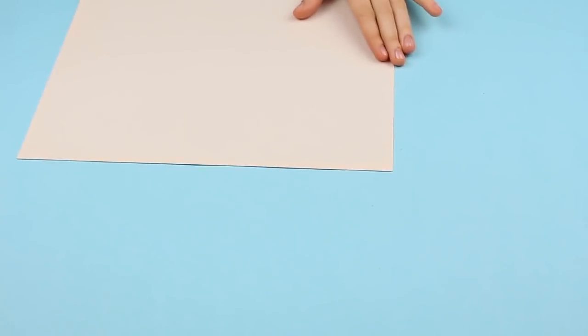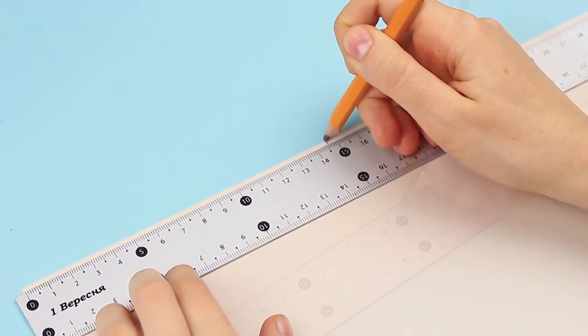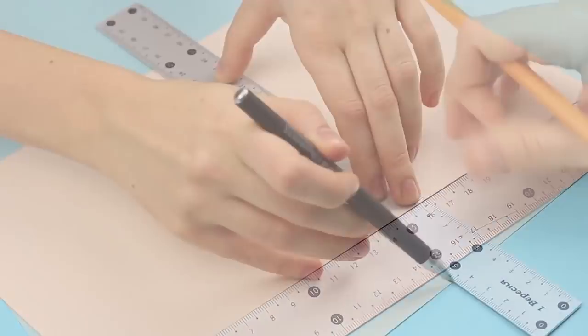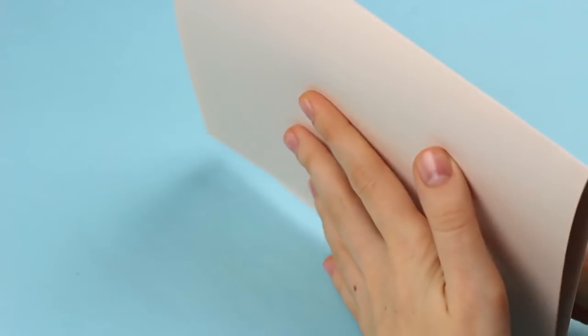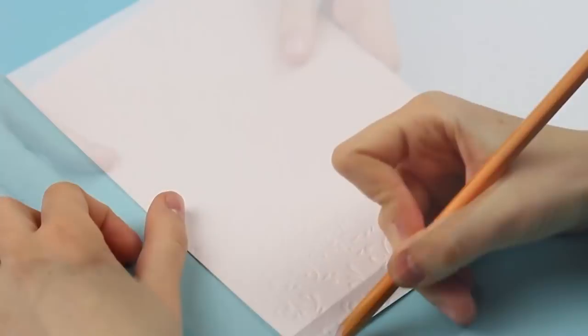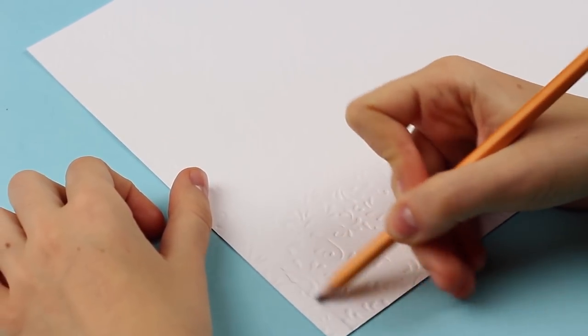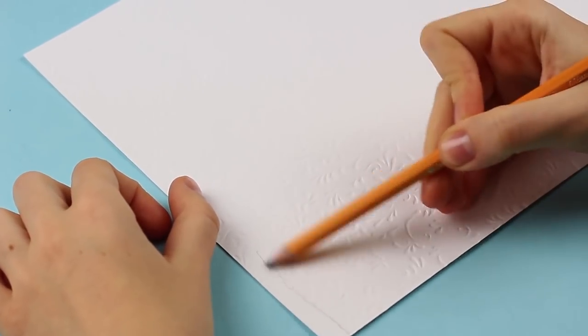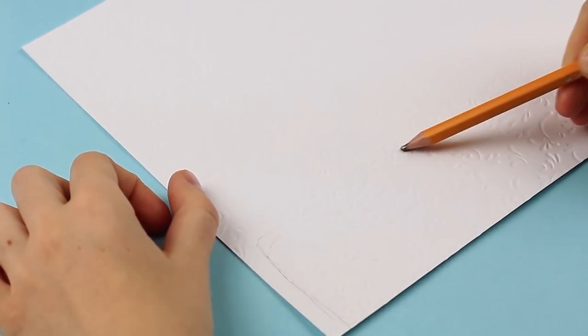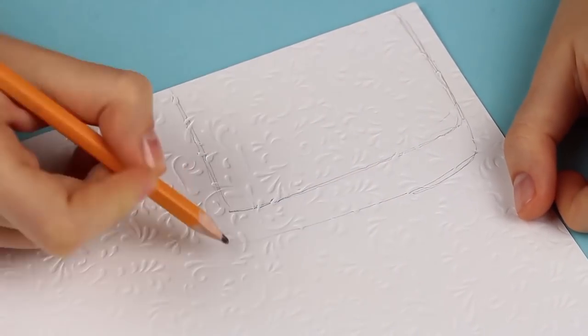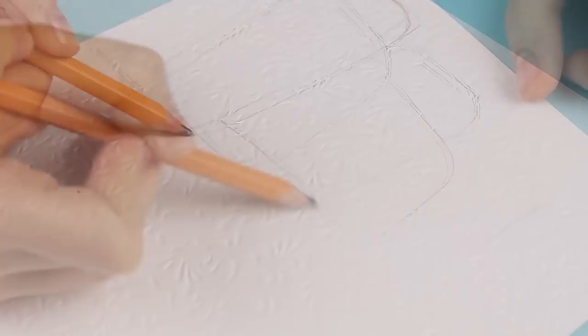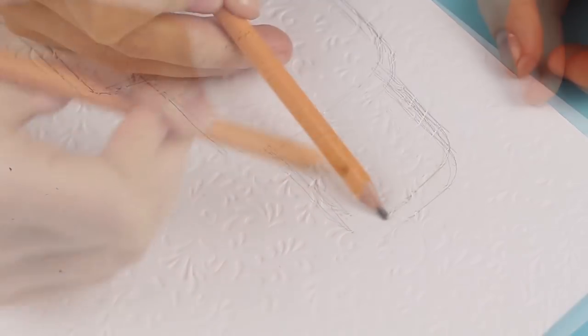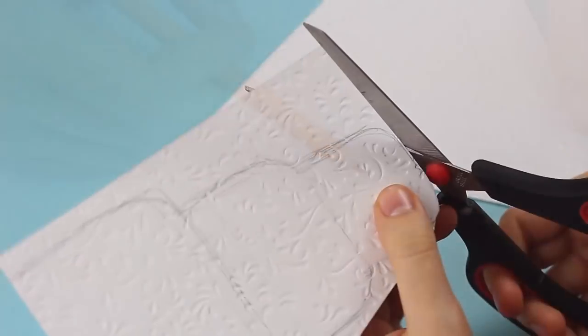Take A4 cardboard. Place it horizontally and find the middle. Score the central line using an empty ballpoint pen. Fold it up. Draw wedding cake on white embossed patterned paper. The lower layer is the widest. The middle one is a bit narrower. And the top one is the smallest. Cut it out.